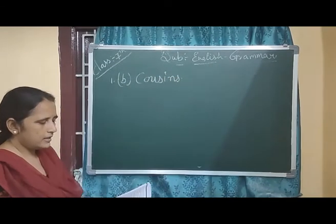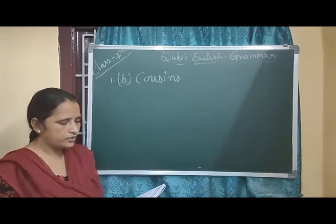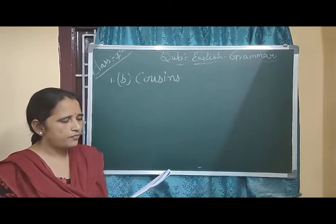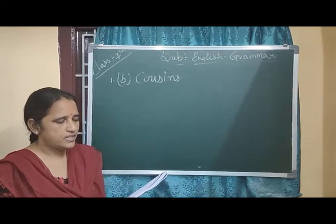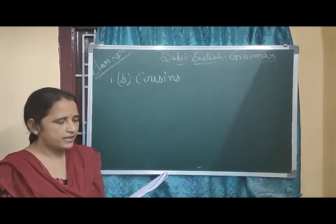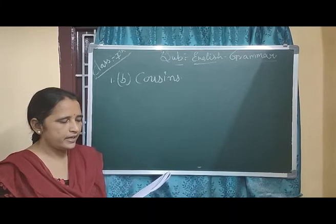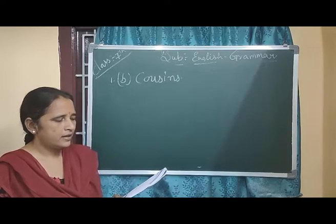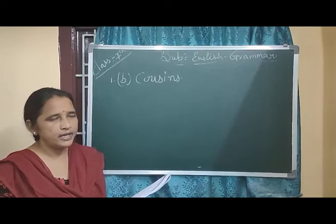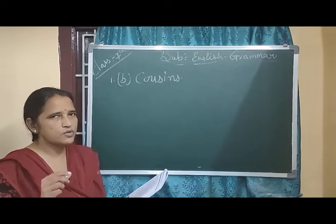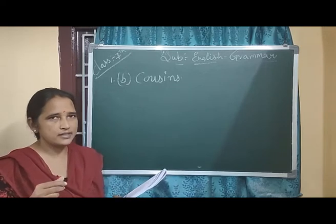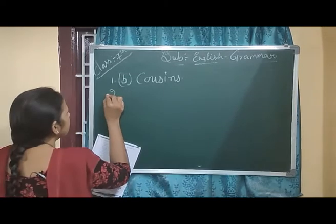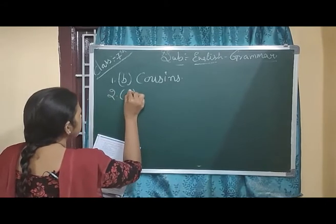As we read in the lesson, now coming to the second question: the house of the town mouse was — first option is a field in a village, B: a building in a village, C: a kitchen cupboard in a town. The town mouse itself indicates it lives in a town, so the correct option is C.